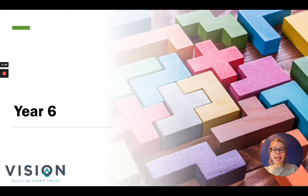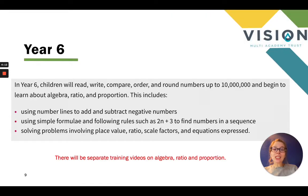So having a look at year six now. In year six, children will be able to read, write, compare, order and round numbers up to 10 million and begin to learn about algebra, ratio, proportion.